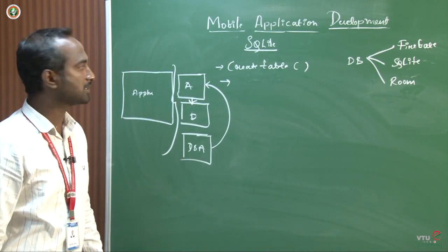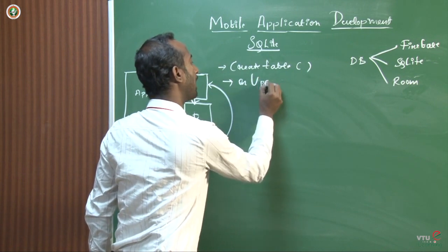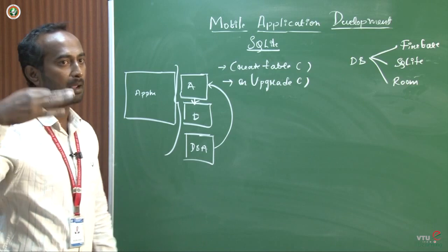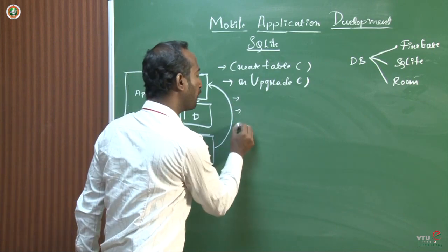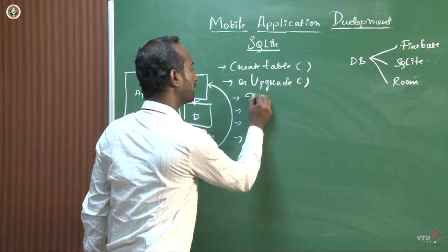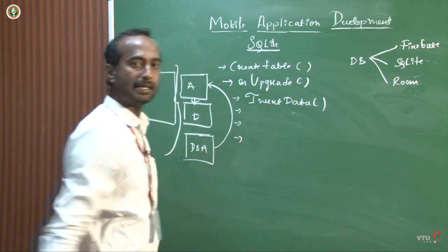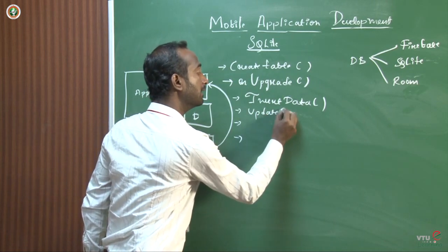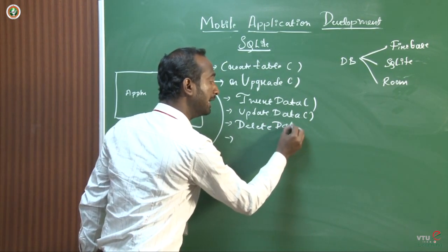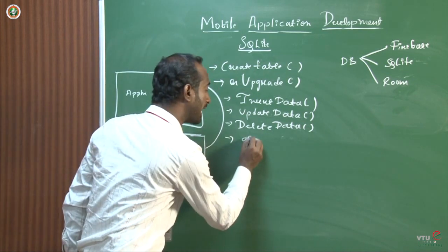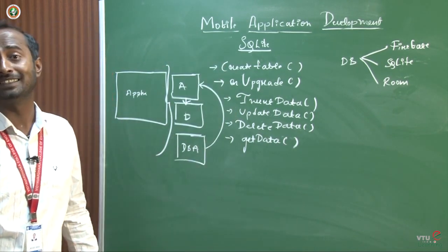Coming to the methods generally used in the database: first is createTable — create the table by providing a unique table name. Another is onUpgrade — if a duplicate table exists, it will drop that table. Then the four basic operations: insertData to insert data, updateData to update inserted data, deleteData to delete data, and getData to view the data that has been inserted.